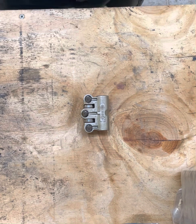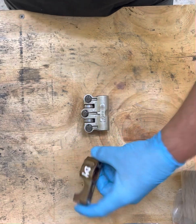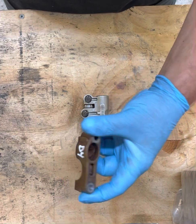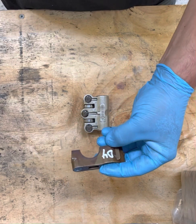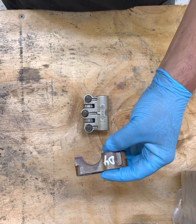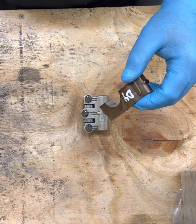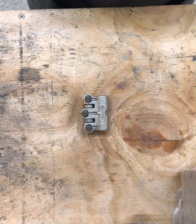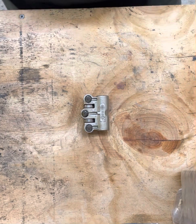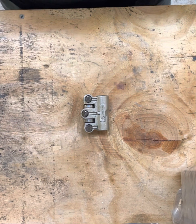So, for example, these cam caps—this one's not cleaned yet as you can tell—but you want to make sure you number them. The reason being is they are line honed to each head individually, so if you mix them up or try putting them in different places, your clearances are going to be off and a lot of things can happen. Your engine can eat itself, pretty much.